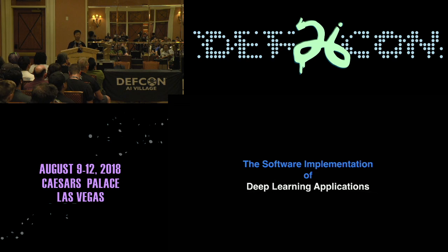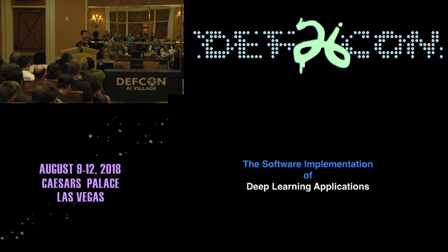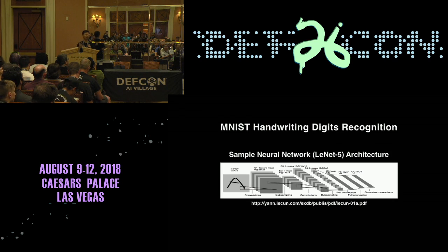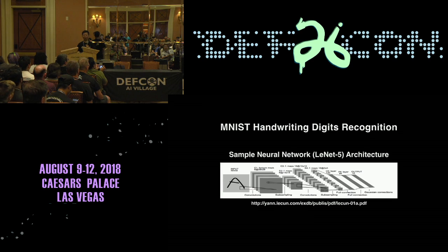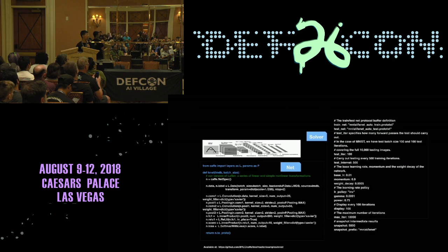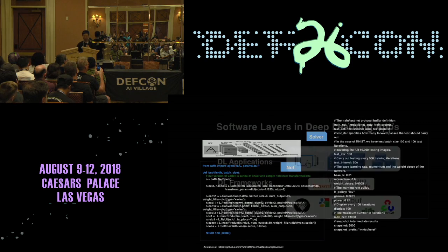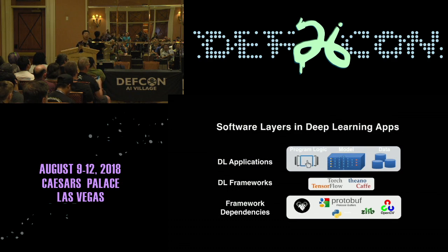Now let's get back to the main topic. I'm not going to talk about machine learning algorithms — I'm going to talk about deep learning implementation. Starting with a simple question: how many lines of code does it take to implement MNIST digit recognition? It's not long — less than 300 lines — you need the network part and the solver. So how can you do such fancy things in such a small piece of code?